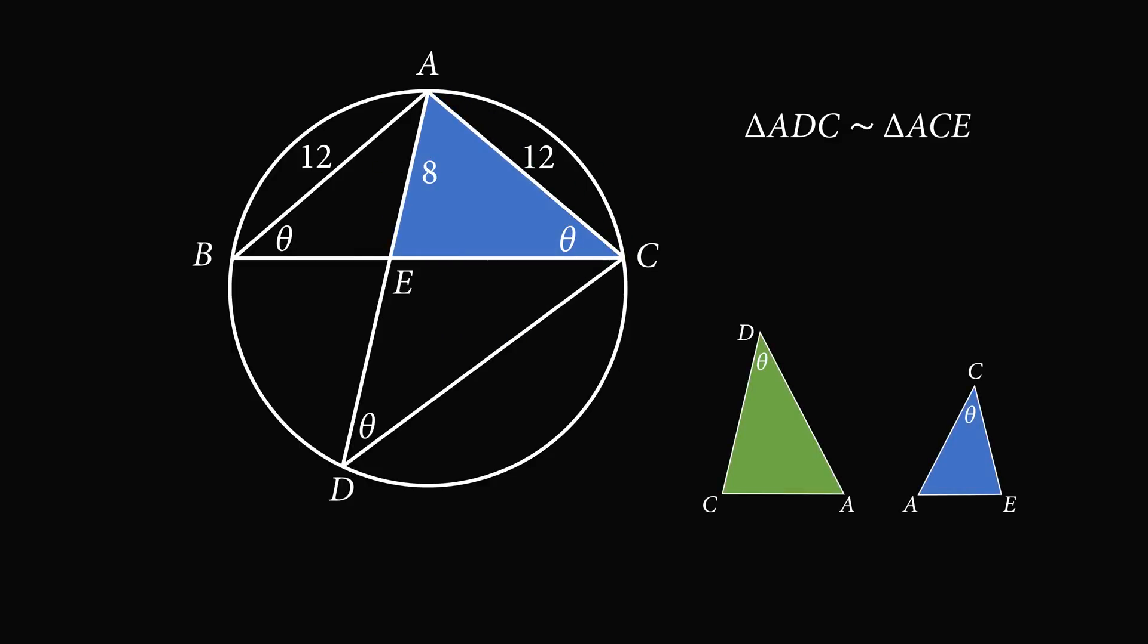Here's another illustration of how the two triangles are similar. Clearly, they have two angles that are equal to theta, and then the angles A are equal to each other. So we have mirror images that are scaled from each other.